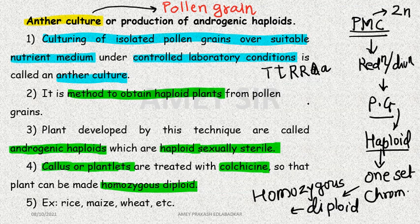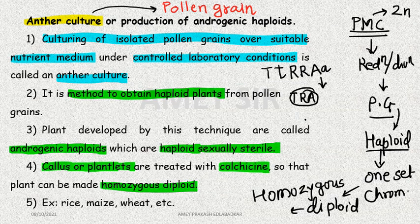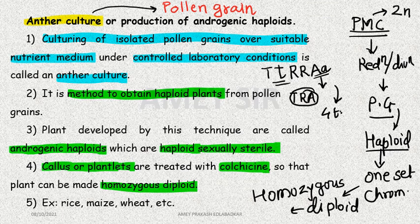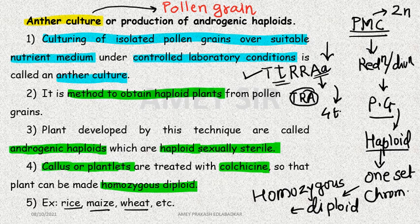The plant has genotype TtRrAa — capital T small t, capital R capital R, small a small a, capital A small a. Its pollen grain will contain, for example, capital T capital R capital A. Since this plant is heterozygous for two characters, it will produce four types of gametes, giving four combinations. If we treat them with colchicine, we can develop four homozygous plants, which is not possible through regular crossing. This helps in rice production by skipping the emasculation process.